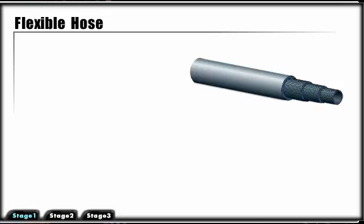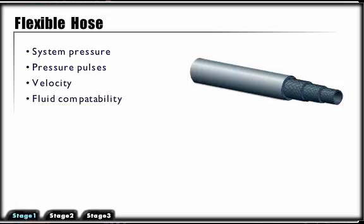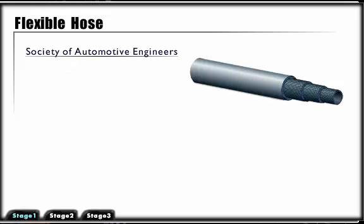Hydraulic hoses are used in applications where lines must flex or bend. In considering the use of hoses, one must first look at system pressure, pressure pulses, velocity, fluid compatibility, and environmental conditions. Hose construction has been standardized by the Society of Automotive Engineers.